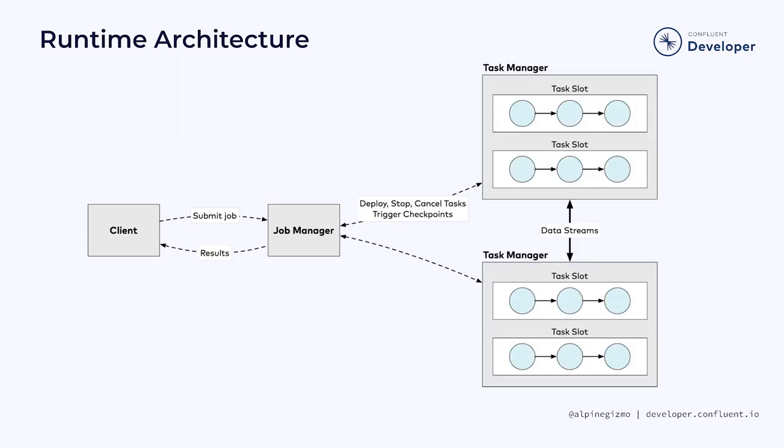When the job manager receives your job, it will find or create the resources needed to run the job. For example, in a containerized environment, the job manager will spin up as many task manager pods as are needed to provide the desired parallelism. Each task manager provides some task slots, each of which can execute one parallel instance of the job graph.